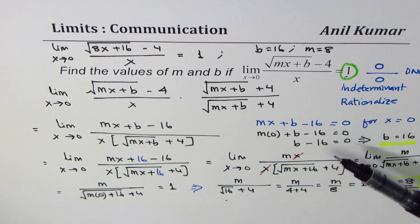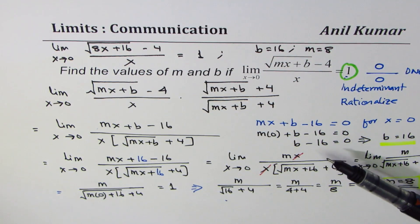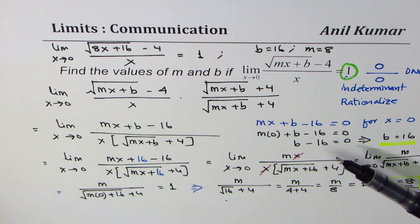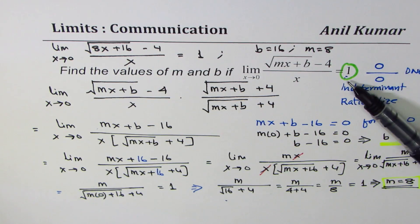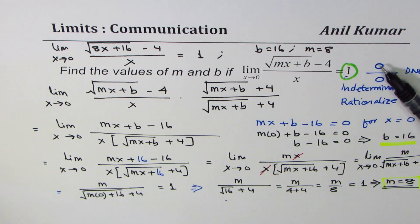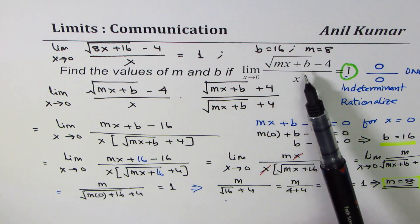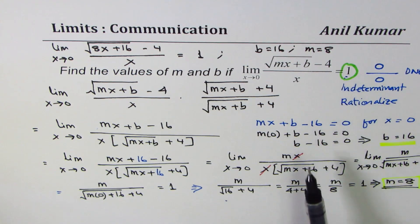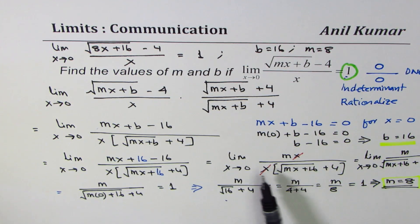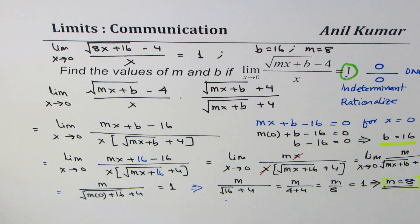The strategy is: first, for the limit to exist, the form must be indeterminate — for that, the numerator must be 0 when x equals 0, giving us the value of b. Then, after rationalizing, setting the limit equal to 1 means numerator and denominator are the same at x equals 0, giving us m equals 8. I'm Anil Kumar — feel free to share my videos, subscribe, and if you like, put some likes. Thank you and all the best.